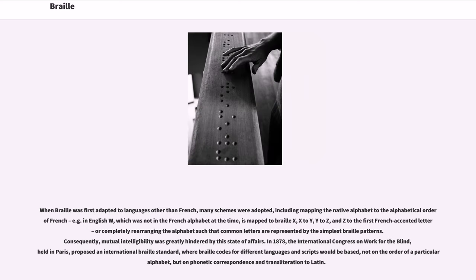When Braille was first adapted to languages other than French, many schemes were adopted, including mapping the native alphabet to the alphabetical order of French — for example in English, W (which was not in the French alphabet at the time) is mapped to Braille X, X to Y, Y to Z — or completely rearranging the alphabet such that common letters are represented by the simplest Braille patterns. Consequently, mutual intelligibility was greatly hindered. In 1878, the International Congress on Work for the Blind, held in Paris, proposed an international Braille standard, where Braille codes for different languages and scripts would be based not on the order of a particular alphabet, but on phonetic correspondence and transliteration to Latin.